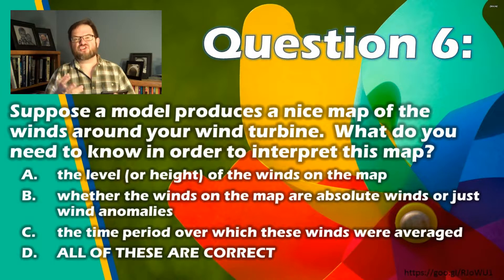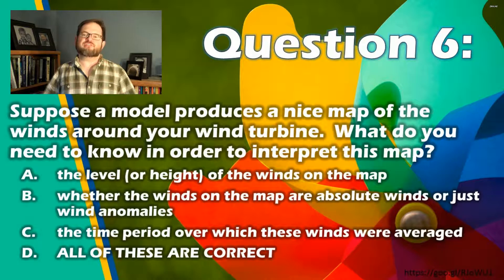There's no fooling you. Of course, they're all correct. That's part of the nature of understanding what the output means. You need to know when this is and where it is, and what the quantities mean and so on. These are all things that you have to know to process the output of a model.